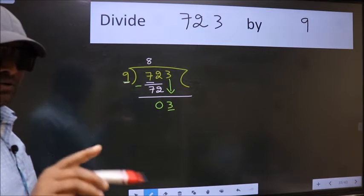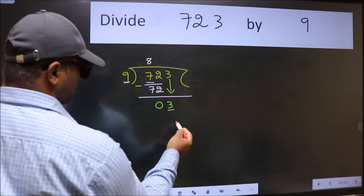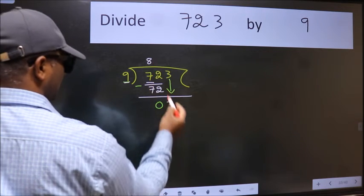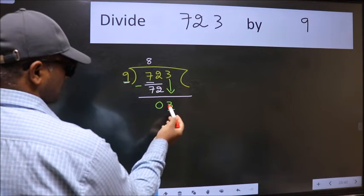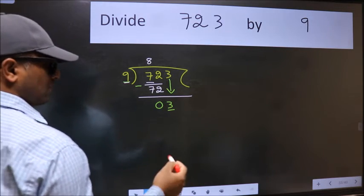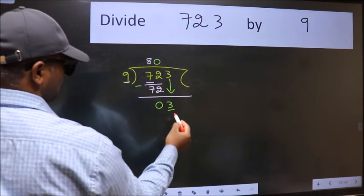Instead of that, what we should think of doing is, which number should we take here. If I take 1, we will get 9. But 9 is larger than 3. So what we do is, we take 0. So 9 into 0, 0.